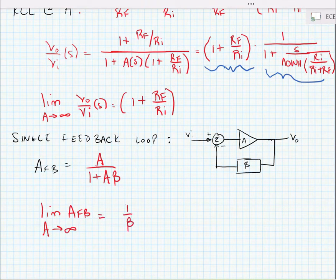Now we know that if we equate this to our op-amp, we're essentially saying that 1/β is equal to 1 + RF/Ri.